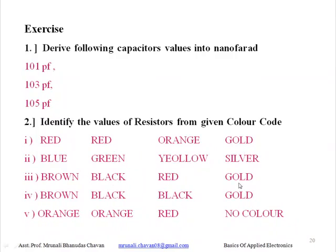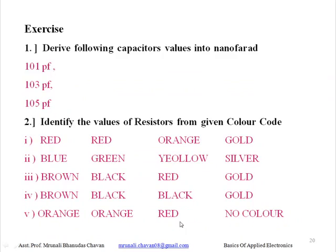The third example is brown, black, red, gold. Other examples include brown, black, black, gold and orange, orange, red, no colour. For red, red, orange you get a value of 22 kΩ or 220 kΩ range. For brown, black, red it is 1 kΩ. For brown, black, black it is 100 ohm. For orange, orange, red it is 2.2 kΩ. Likewise, calculate the values for all the given colour codes.